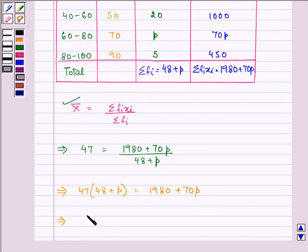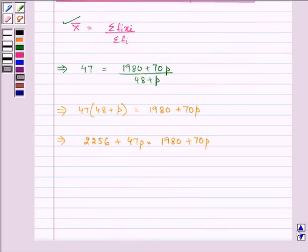That further equals 2256 plus 47P equal to 1980 plus 70P. Now we are solving for P.